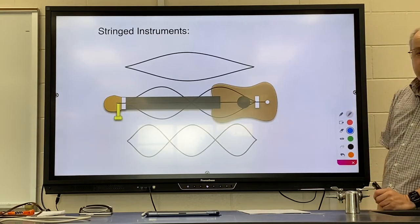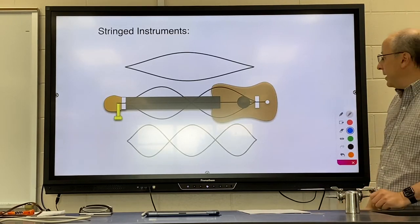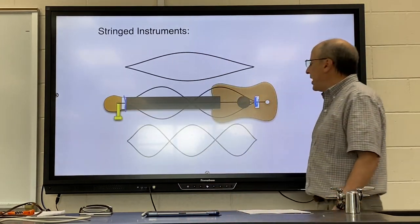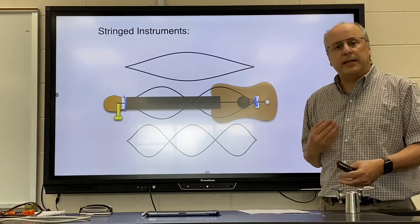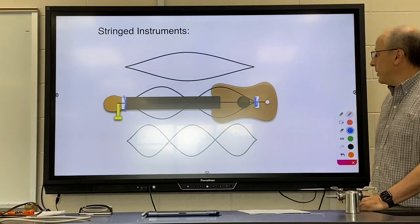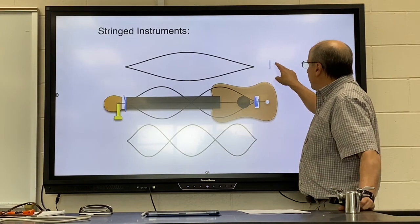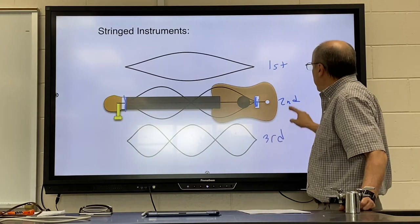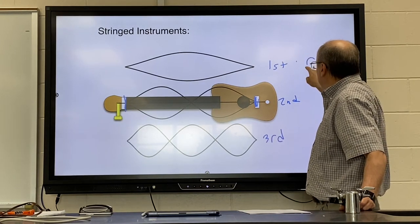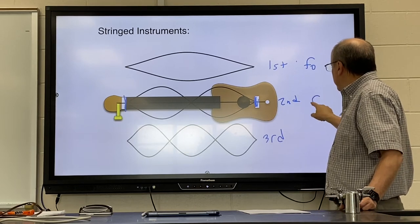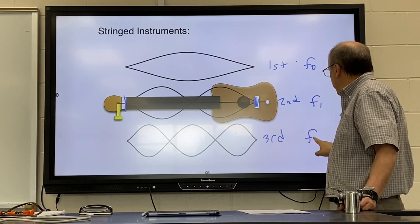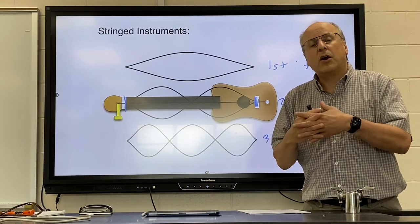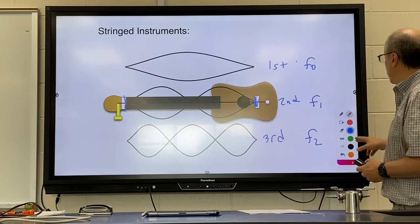With stringed instruments it's the same thing. Something locks down the string at each end and the string oscillates in between. The string will have different modes of oscillation — the first harmonic, the second harmonic, the third harmonic. This is called your fundamental, this is your first overtone, and your second overtone. Different modes of oscillation give us different frequencies from the same string.